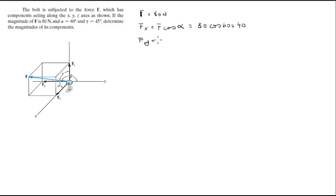F_Y is F cosine theta... F_Z is equal to F cosine of this angle, which is 80 cosine 45 degrees, which equals 56.57 newtons.